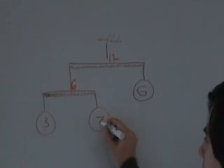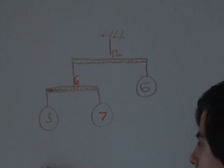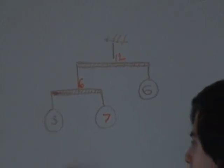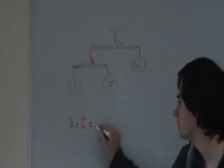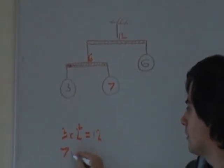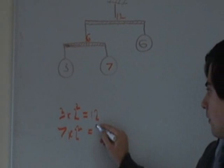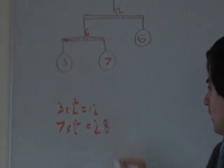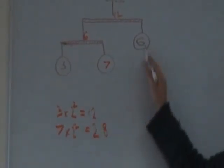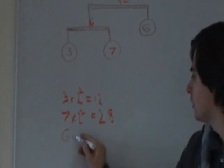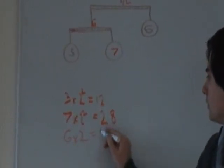So in the original problem statement, we had 3, 7 and 6. So we would list 3 times 2 to the power 2 equals 12, 7 times 2 to the power 2 equals 28, and 6 times 2 equals 12.